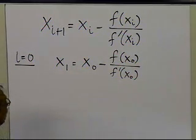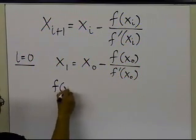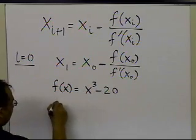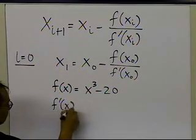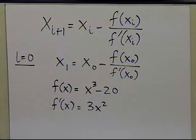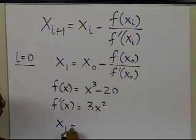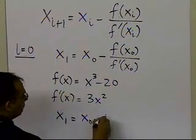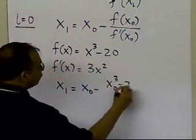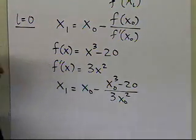I need the derivative of the function, so I'm going to step back a little bit. The function which I have is x cubed minus 20, and the derivative of this function is 3x squared. So what I will get is that x1 will be equal to x0, minus the value of the function at x0, which is x0 cubed minus 20, divided by 3x0 squared.